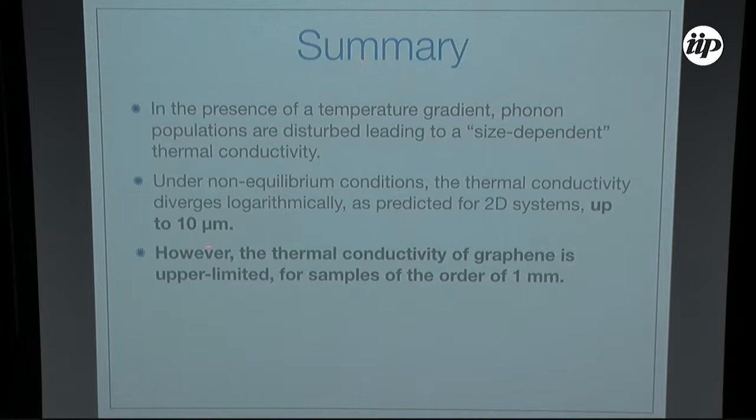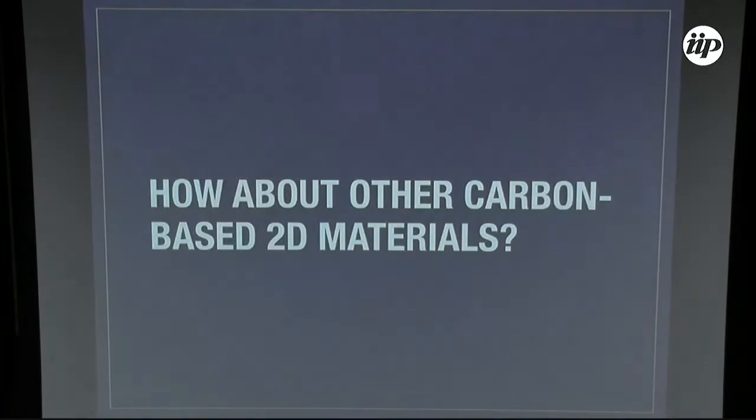To summarize: the thermal conductivity of graphene does converge after a certain point, but you need samples of the order of one millimeter — good quality samples of one millimeter, which is really difficult to make in the lab.